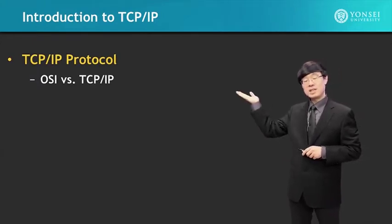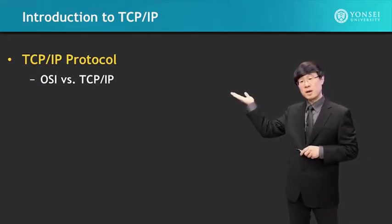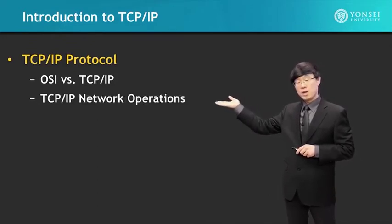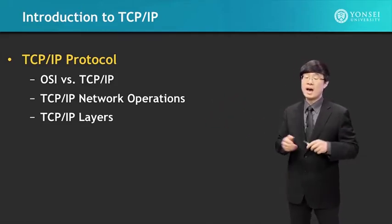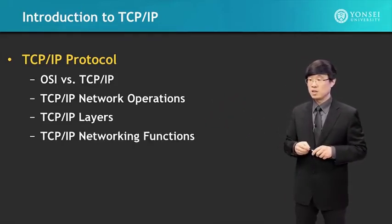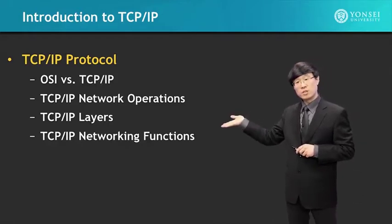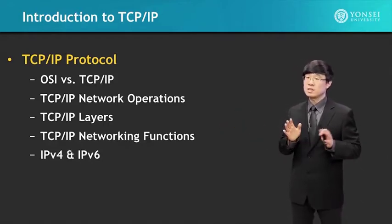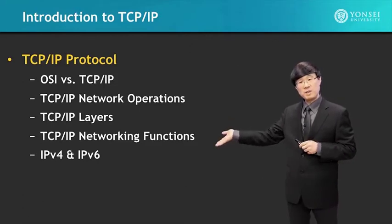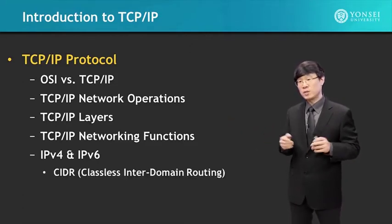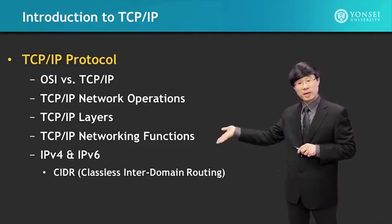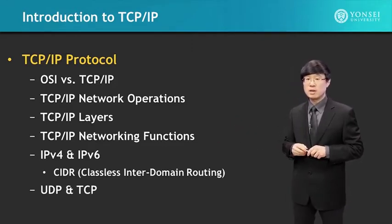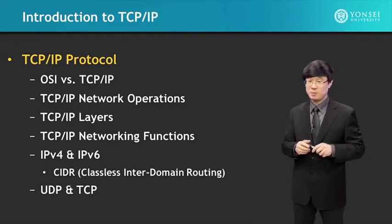In the TCP/IP protocol lecture, we're going to study about the OSI 7-layer model and the TCP/IP 5-layer model, network operations and the TCP/IP layers, and their networking functions. We'll also study some details on IPv4 and IPv6, which include the CIDR notation — classless inter-domain routing — and the protocol structure of UDP and TCP.